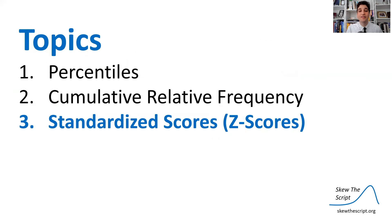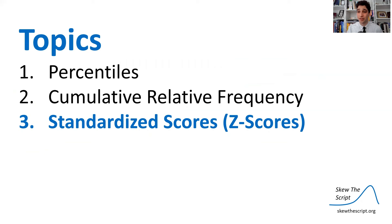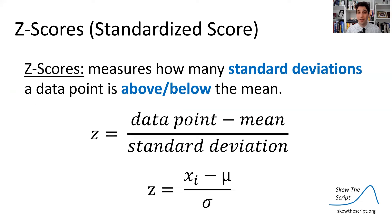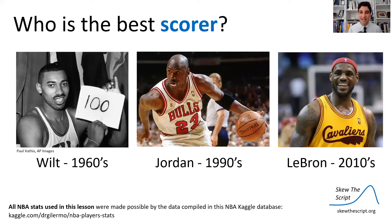Now let's look at standardized scores, or z-scores. Z-scores measure how many standard deviations a data point is above or below a mean. The formula: take the data point, subtract the mean, and divide by the standard deviation. Let's apply this to our key analysis: who was the best scorer? Wilt Chamberlain played in the 1960s NBA, Michael Jordan in the 1990s, and LeBron James in the 2010s. We're just talking about their scoring.